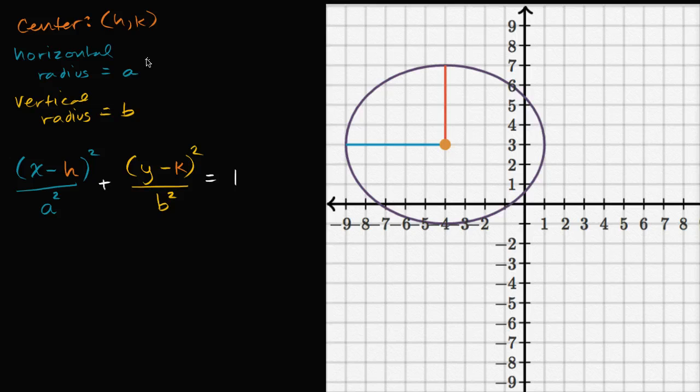So what are h and k and a and b in this situation? Well, h and k are pretty easy to figure out. The center of this ellipse is at the point, the x-coordinate is negative four, and the y-coordinate is three, so this right over here is negative four, and this right over here is positive three.